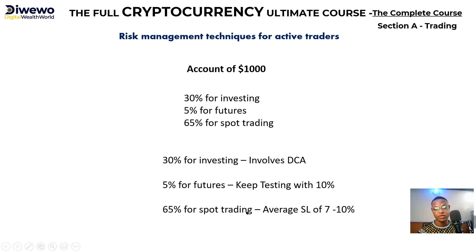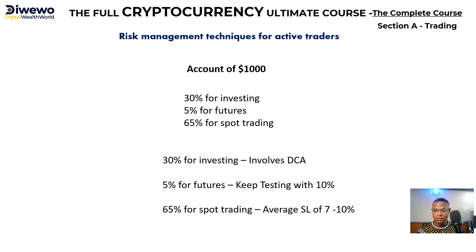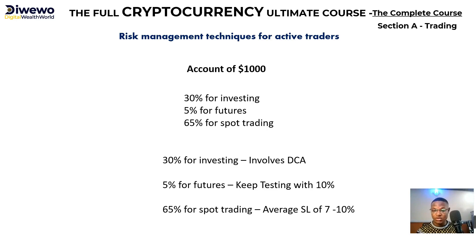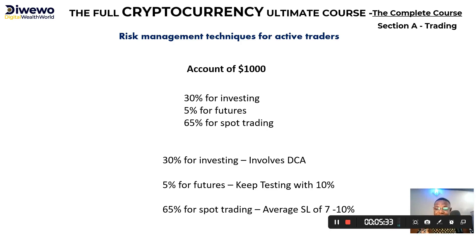65% for spot trading, using a stop loss between seven to ten percent — or any amount you are willing to lose. With this form of trading you won't lose all your funds because you are protecting your account. You can't use a one hundred dollar account to trade futures aggressively — it's very risky. Spot can give you profit too; you just have to manage your risk. If you try to get money too quickly you will definitely lose it, so capital protection comes first.